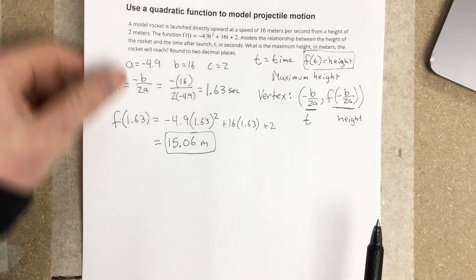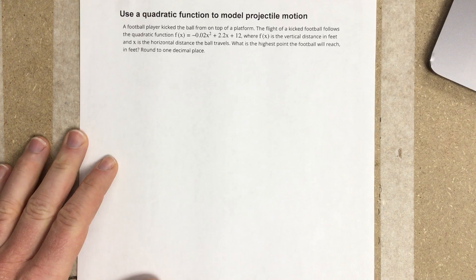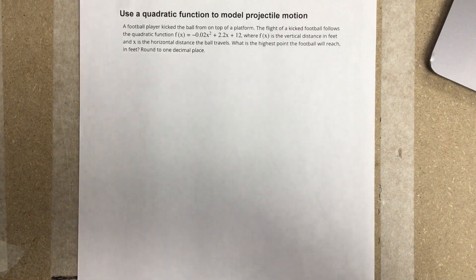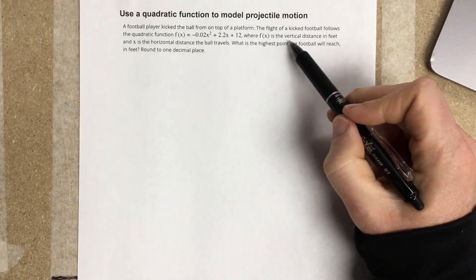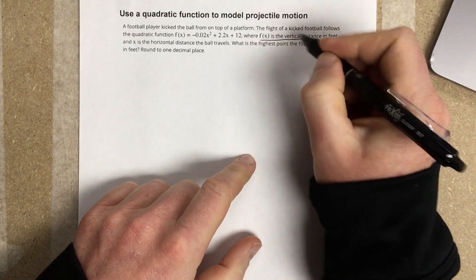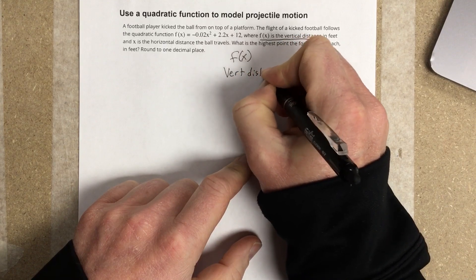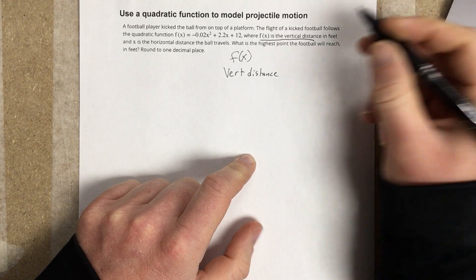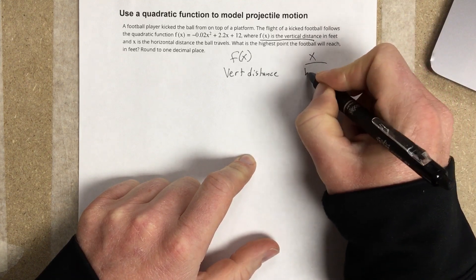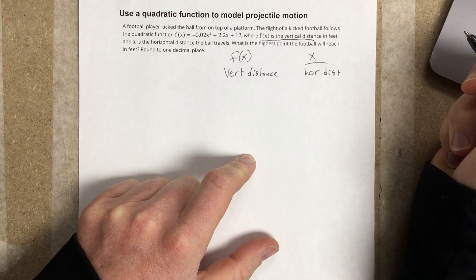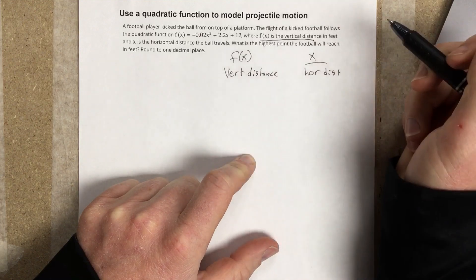Let's do a second example. A football player kicked the ball from on top of a platform. The flight of a kicked football follows the quadratic function f(x) = -0.02x² + 2.2x + 12, where f(x) is the vertical distance in feet and x is the horizontal distance the ball travels. What is the highest point the football will reach in feet? Round to one decimal place.